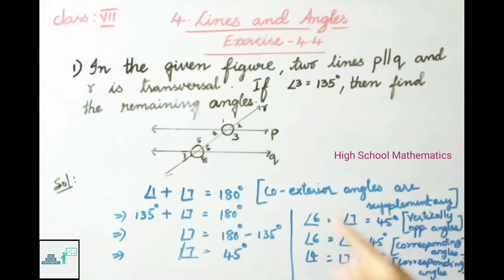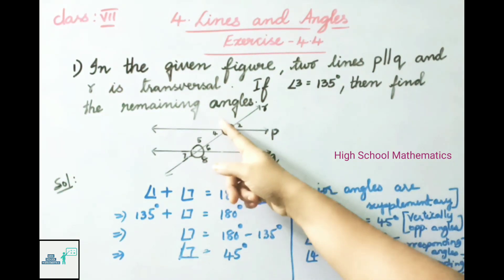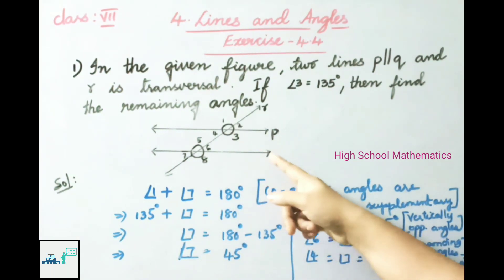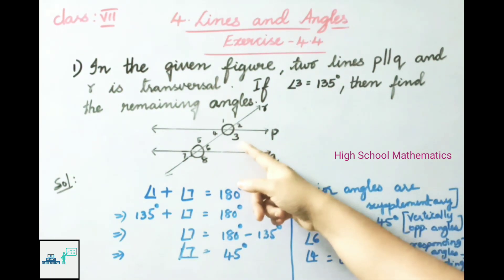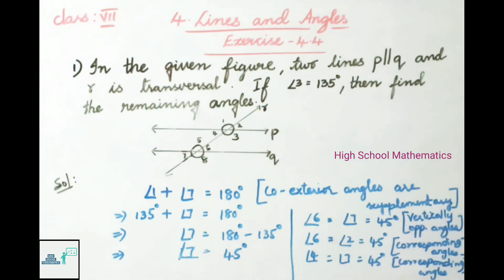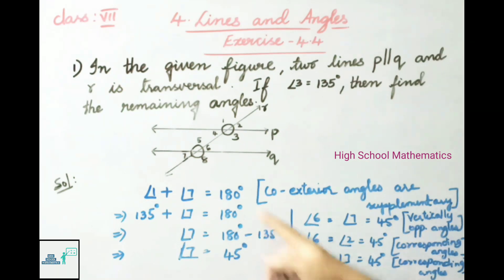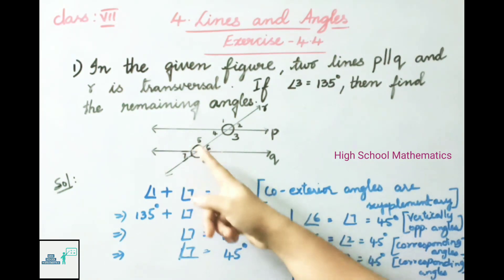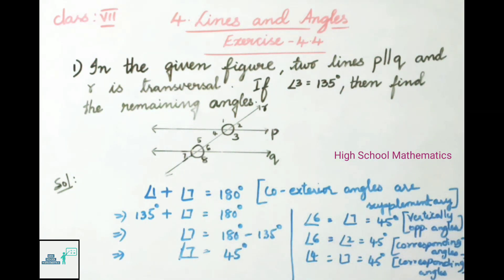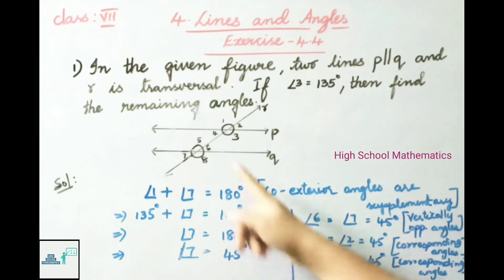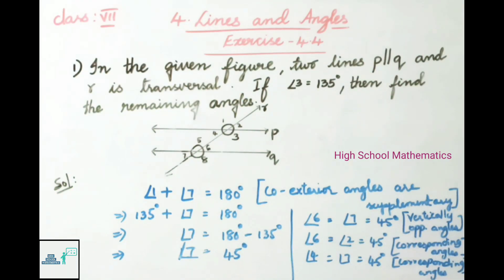Therefore angle 1 is 135 degrees and angle 3 is 135 degrees. Angle 2 and angle 4 are 45 degrees each. Angle 5 and angle 8 are 135 degrees. Angle 6 and angle 7 are 45 degrees each.